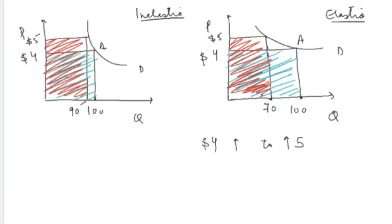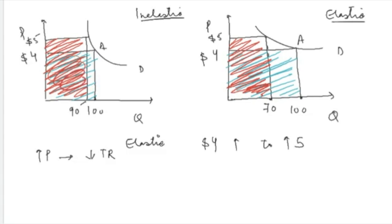You can clearly see from the two figures that an increase in price causes a decrease in total revenue when the demand curve is elastic. Whereas you will notice the opposite happening in the inelastic case. In the inelastic case, this was the initial total revenue area. When price increased, this extra area is the additional revenue now being earned. If you look at these two areas carefully, the increase in total revenue is greater than the decrease in total revenue.